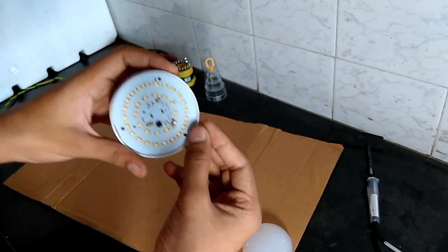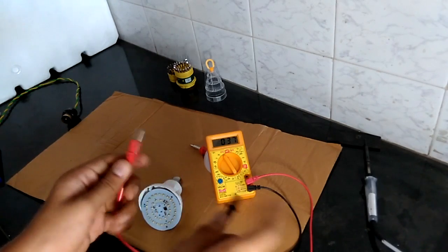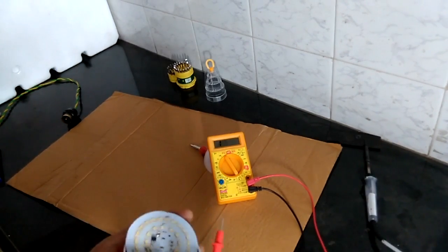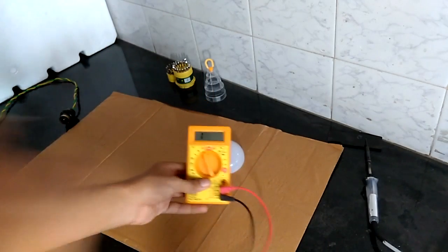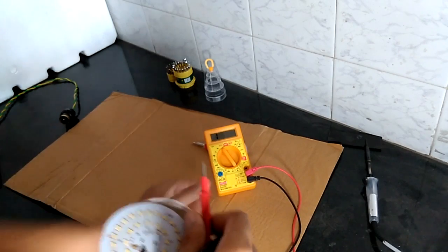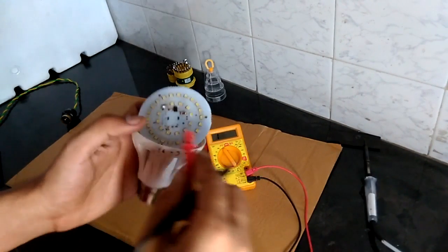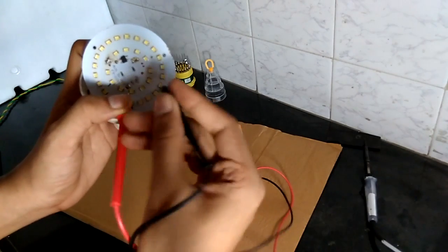In the multimeter you will find an option called continuity check. Just tune to the continuity and you have to check the LEDs one by one. If the LED is working then it will glow, otherwise it won't glow. Whatever is not glowing, you can just mark it using a marker.